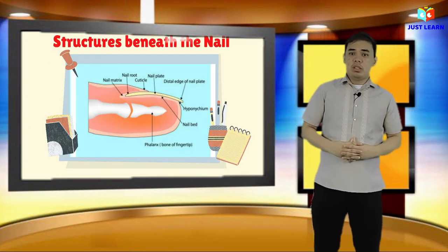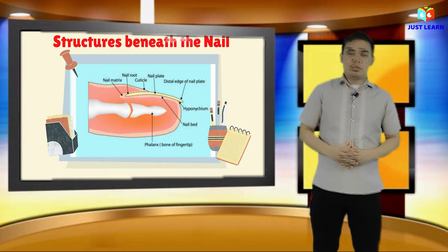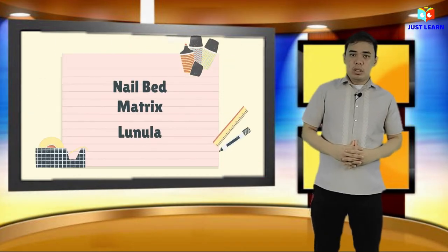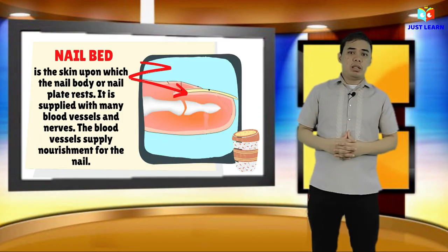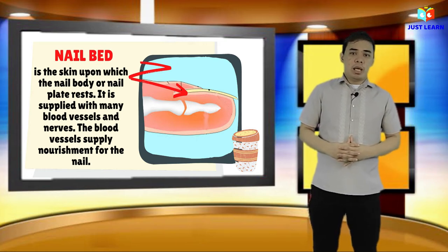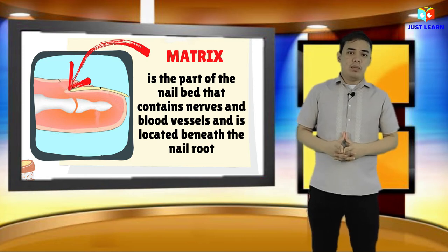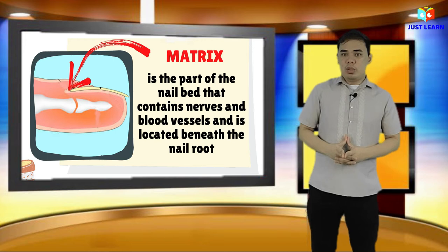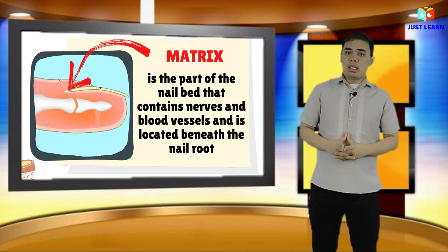Aside from the nail body, nail root, and the free edge, there are also structures that can be found beneath the nail. The structures beneath the nail include the nail bed, matrix, and lunula. The nail bed is the skin upon which the nail body or nail plate rests. It is supplied with many blood vessels and nerves, which supply nourishment for the nail. Next is the matrix — this is the part of the nail bed which contains nerves and blood vessels and is located beneath the nail root. It produces cells that regenerate and harden the nail and will continue to grow as long as it receives nutrition and remains in a healthy condition.